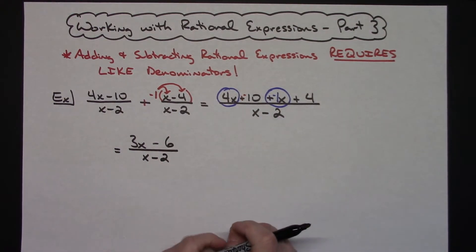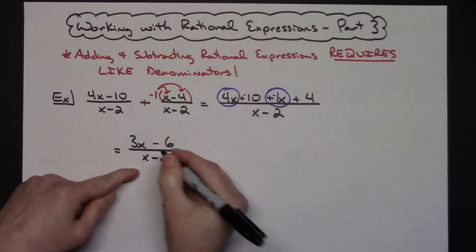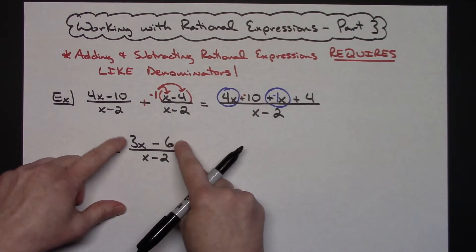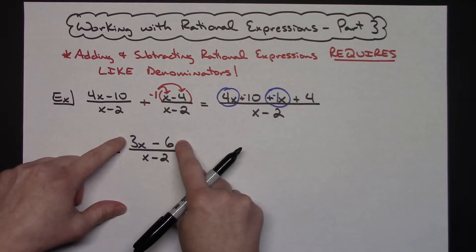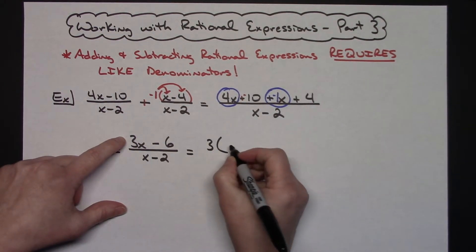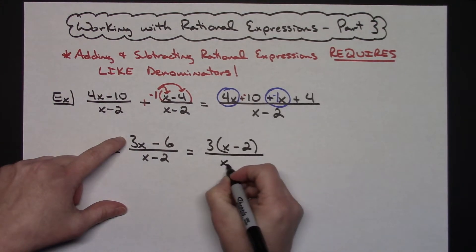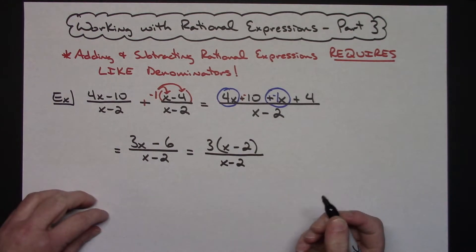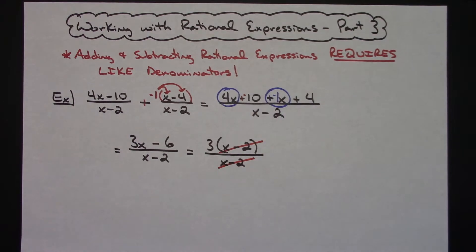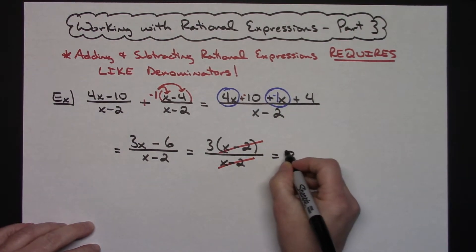Once you do something like that you can't just assume that you are done. Check both the numerator and the denominator and make sure you can't factor something else out. In this numerator I can factor out a 3, which gives me 3 times the quantity x minus 2. I do have that same binomial x minus 2 on the bottom, so they cross out and I have a final answer of just three.